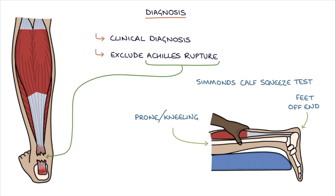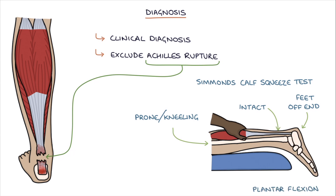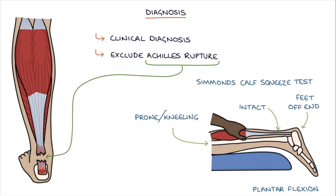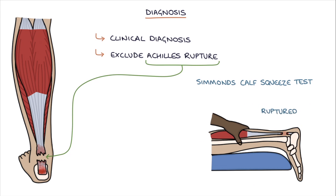When squeezing the calf muscle in the leg with an intact Achilles, there will be plantar flexion of the ankle, with the foot moving in a downward direction — squeezing the calf muscle pulls on the Achilles tendon. When the Achilles is ruptured, the connection between the calf and the ankle is lost; therefore, squeezing the calf will not cause plantar flexion. A lack of plantar flexion is considered a positive result, suggesting Achilles tendon rupture.